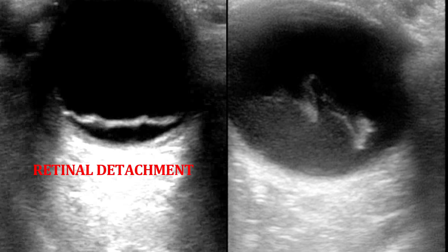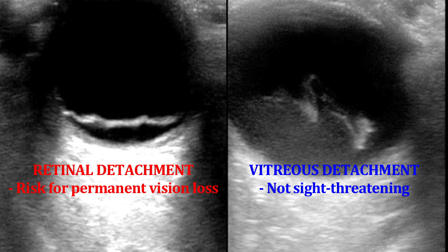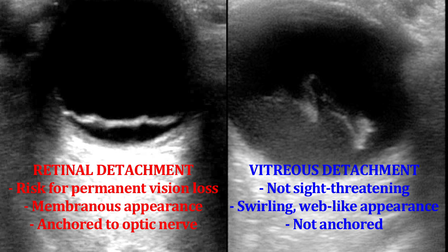These two images are of retinal and vitreous detachment. I'm showing them side by side because they can look a lot alike. Retinal detachment is an emergency situation, as it does put the patient at risk for permanent vision loss. Vitreous detachment is not an emergency, as it's normally not sight-threatening — it's also a much more subtle finding on ultrasound. Retinal detachment has a much thicker membranous appearance, while vitreous detachment kind of looks like a spiderweb. Another distinguisher is that the retina is anchored to the optic nerve, whereas vitreous detachment can peel off anywhere.